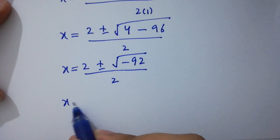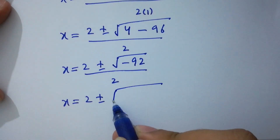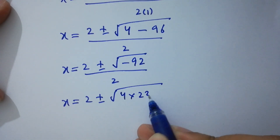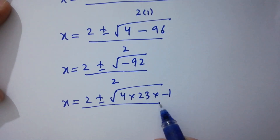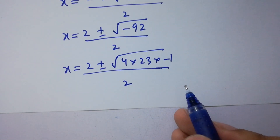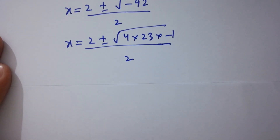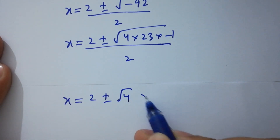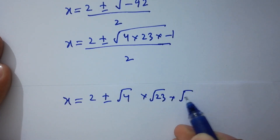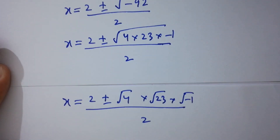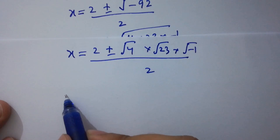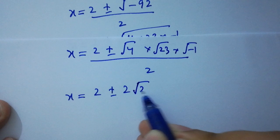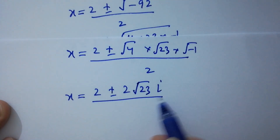x equals 2 plus or minus square root of (4 times 23 times negative 1) over 2. This becomes x equals 2 plus or minus square root of 4 times square root of 23 times square root of negative 1 over 2. Since square root of 4 is 2 and square root of negative 1 is i for complex numbers, we have 2 in the numerator.